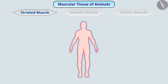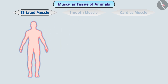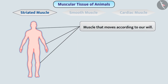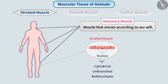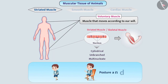We can move our hands, feet, and neck-like organs as per our wish. The muscle that moves according to our will is called voluntary muscle. When observed under a microscope, alternate bands of dark and light colors are seen, which is why it is also called striated muscle. The cells of this muscle are long, cylindrical, unbranched, and multinucleate. This muscle is usually associated with bones, so it is also called skeletal muscle. It helps in body movements and maintains the posture and position of the body.